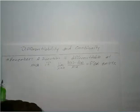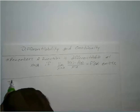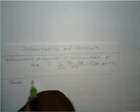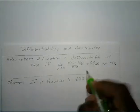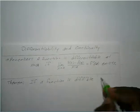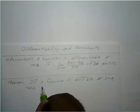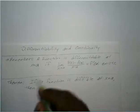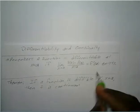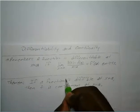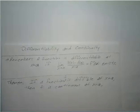This leads us to our theorem. If a function f is differentiable at x equals a, then the function f is continuous at x equals a. All we have to do now is prove whether that's true.